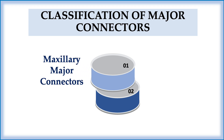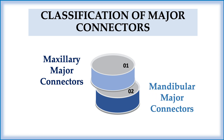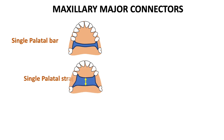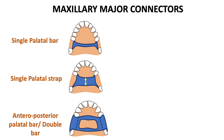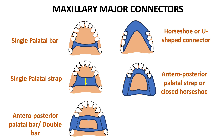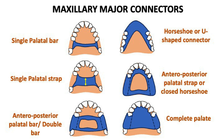We have two types of major connectors: maxillary major connectors and mandibular major connectors. In this video we discuss maxillary major connectors in detail; mandibular will be covered in the next video. The various maxillary major connectors are: palatal bar, single palatal strap, anterior-posterior palatal bar (double bar), horseshoe or U-shaped, anterior-posterior palatal strap (closed horseshoe), and complete palate.